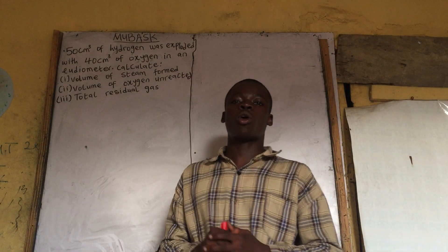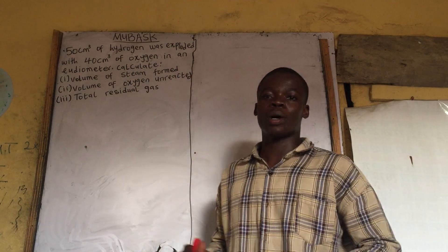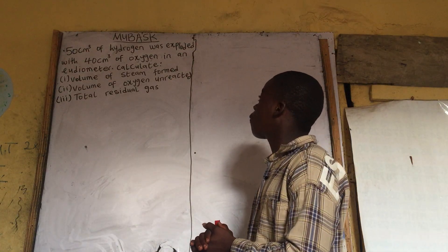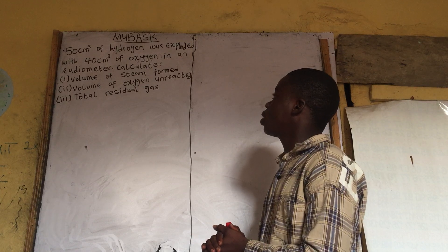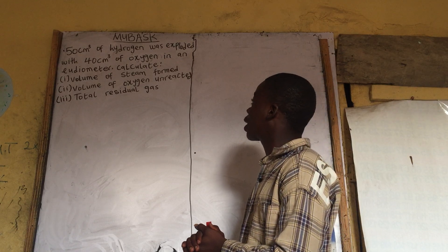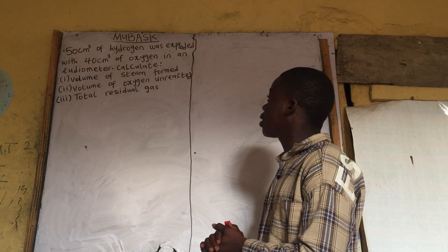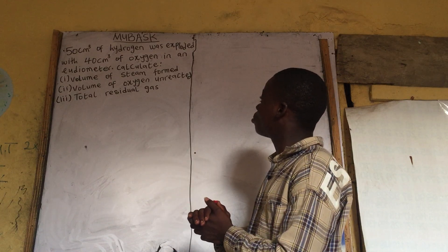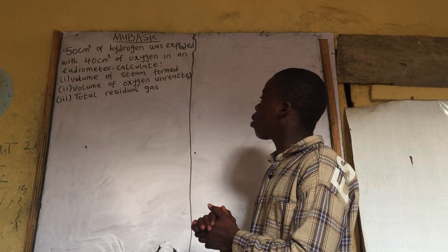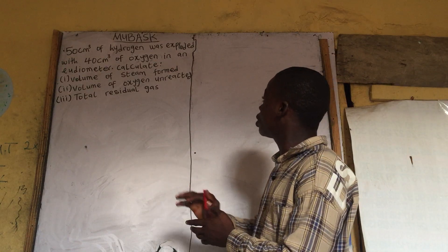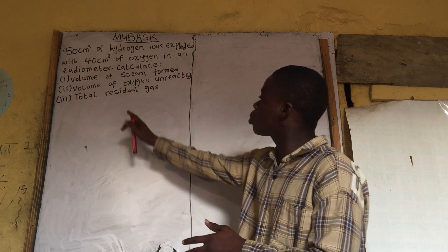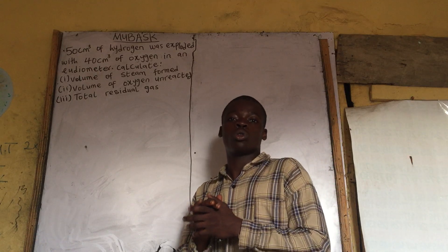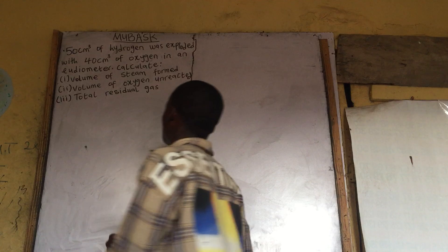Good day, my viewers. Welcome back. They are giving us a chemistry problem: 50 centimeter cube of hydrogen was exploded with 40 centimeter cube of oxygen in an eudiometer. Calculate: one, the volume of steam formed; two, the volume of oxygen unreacted; and three, the total residual gas. To solve it is very simple. Please subscribe or follow this channel for more question solutions.